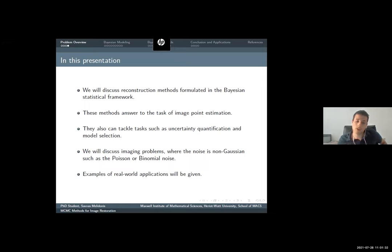In Bayesian statistics, we can incorporate any observation process we have, and also any prior information we have for our true image. So we can answer to the task of image restoration quite efficiently.